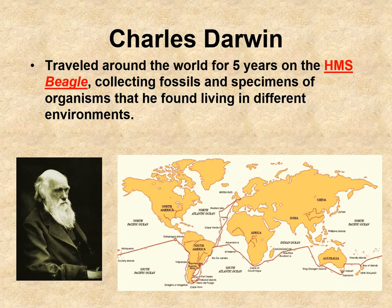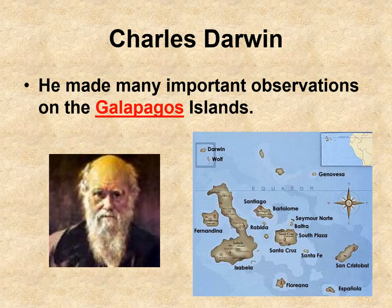The father of evolution is considered to be Charles Darwin, and he did travel around the world for about five years on Her Majesty's Ship the Beagle. During this time, he collected fossils and specimens of organisms that he found all over the world. This map shows all the different places that he went, but one place in particular really got him thinking — the Galapagos Islands.